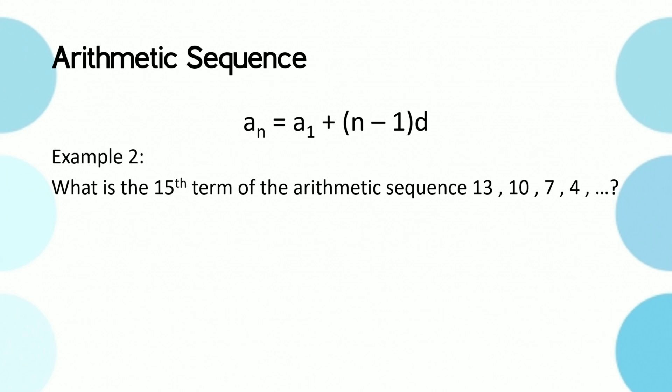What is the 15th term of the arithmetic sequence 13, 10, 7, 4? Again, find the given values. a_1 is 13, n is 15 because there are supposedly 15 terms, and the common difference is 10 minus 13, which is negative 3.